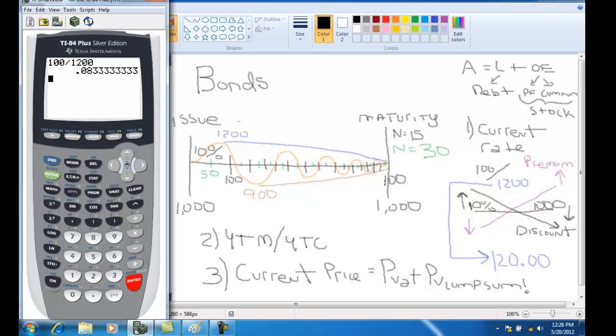Now if you look closely, we actually have five bits of data that represent our time value of money calculations. When we are calculating yield to maturity and yield to call, all we are calculating is the interest rate. With a premium bond, we are annualizing our loss over these periods. With a discounted bond, we are annualizing our gains over these periods.